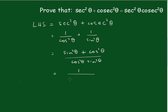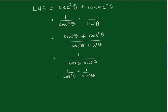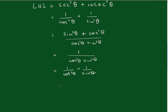That's 1/(cos²θsin²θ). And that is (1/cos²θ) × (1/sin²θ). And of course 1/cos²θ is sec²θ, and 1/sin²θ is cosec²θ.